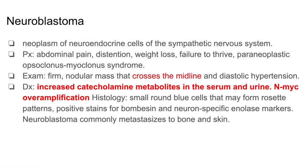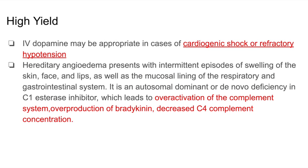In order to treat cases of cardiogenic shock or refractory hypotension, you can administer IV dopamine. If a patient presents with intermittent episodes of swelling of the skin, face, and lips, you want to suspect hereditary angioedema. This can be an autosomal dominant condition or due to de novo deficiency in C1 esterase inhibitor. In patients with hereditary angioedema, there is over-activation of the complement system, over-production of bradykinin, and decreased C4 complement concentration.